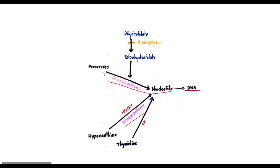In the de novo pathway, precursors for nucleotide synthesis include sugar, phosphate, and nitrogen bases. This forms the nucleotide. The de novo pathway also involves tetrahydrofolate as a key compound.